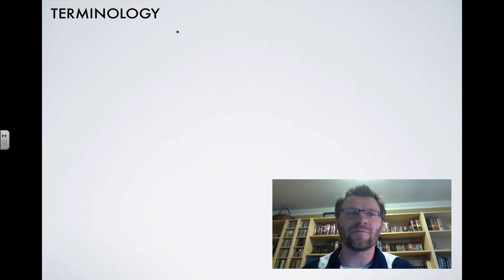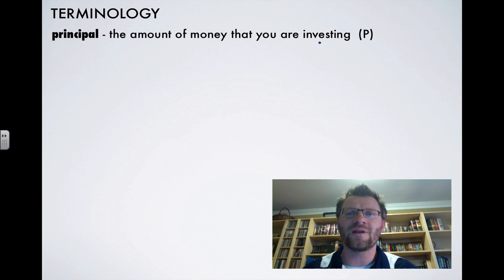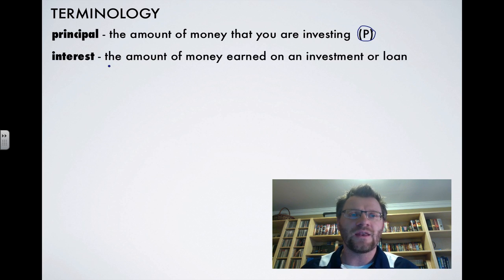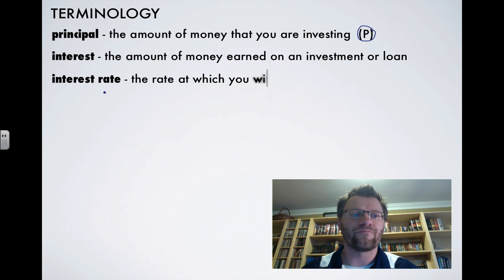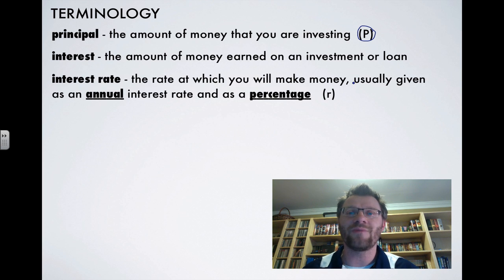Here's some terminology that you need to become familiar with to understand this unit. First one is the principle, and that's the amount of money that you're actually investing. So that would be the letter P. The Interest is the amount of money earned on an investment or loan. The Interest Rate is the rate at which you will make money, usually given as an annual interest rate, that's a key word, annual, and as a percentage. And we use the letter R to represent that.